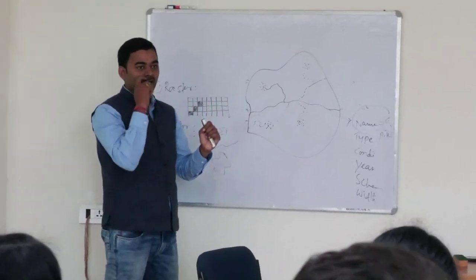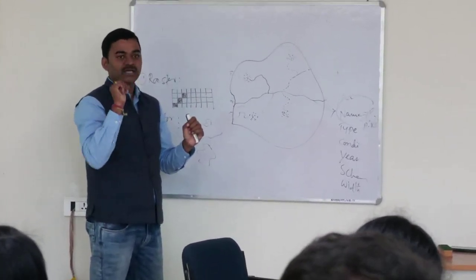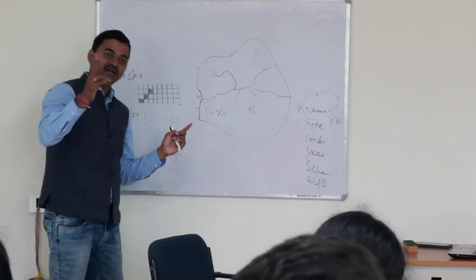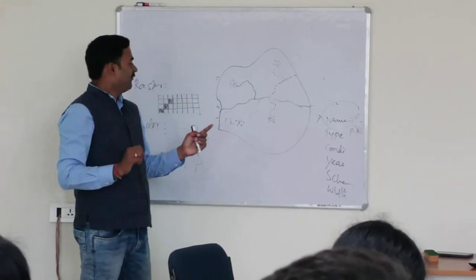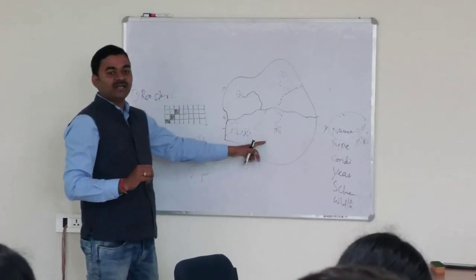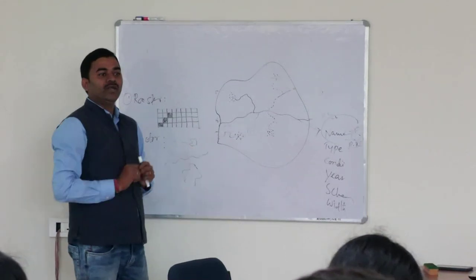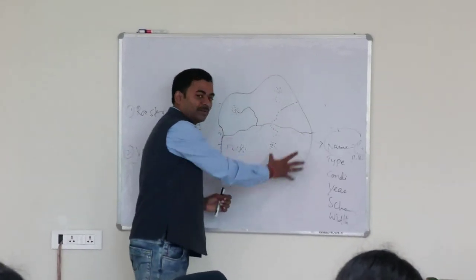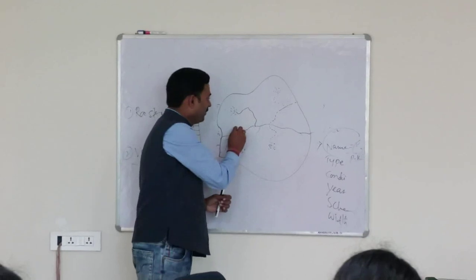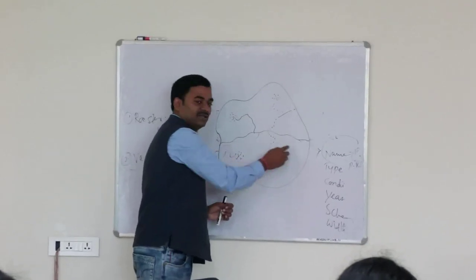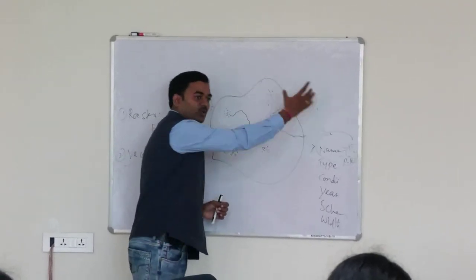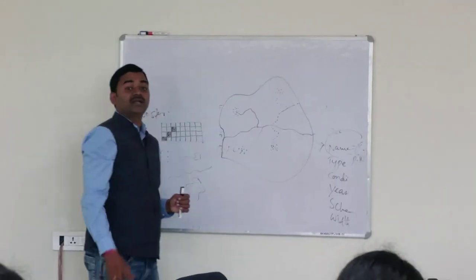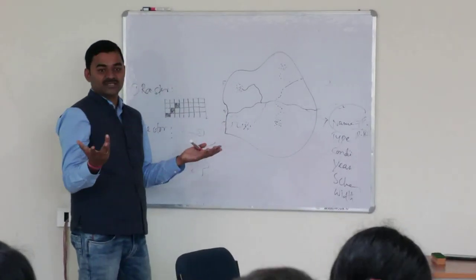When you talk about data analysis, we have two kinds of data: spatial data and non-spatial data. When you talk about spatial data, it will directly show. If you ask a query in GIS, the system will show you — for example, show me all the paka roads. Then all paka roads will be highlighted, and the total length will come as non-spatial data. This is called spatial analysis.